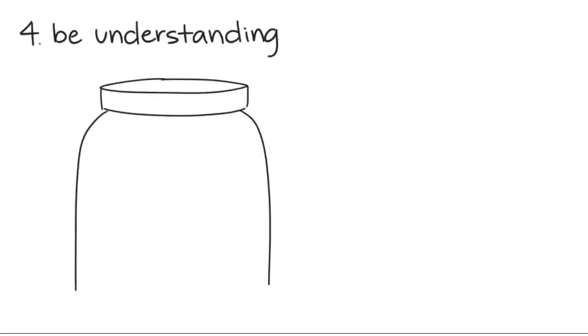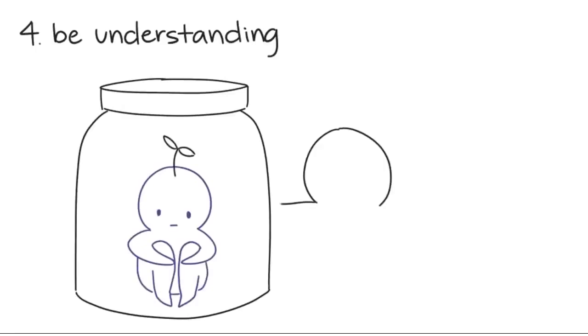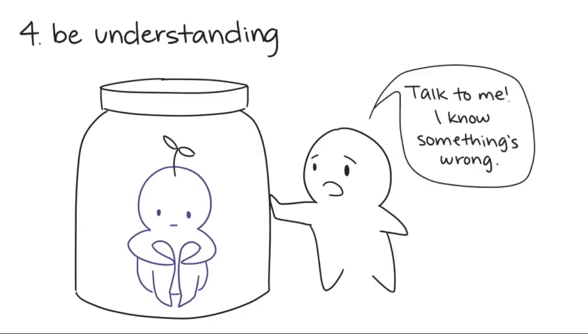Number 4. Be sensitive. Introverts tend to internalize a lot, so they're prone to bottling things up inside. They need someone who can sense and consider their feelings because they don't enjoy starting conflicts. That's not to say that they're necessarily afraid of it, but they're more careful about what battles to fight.